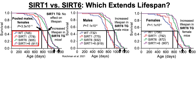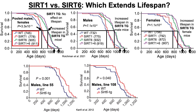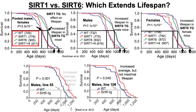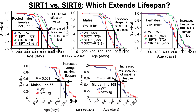Other studies have also shown SIRT6 can improve lifespan. In one study, mice were engineered to have higher levels of SIRT6 in two separate groups — line 55 and line 108. Line 55 showed increased average and maximal lifespan in male mice. Line 108 showed an increase in average but not maximal lifespan. However, lifespan in the SIRT6 transgenic female mice was not extended.